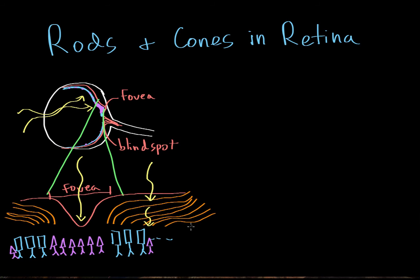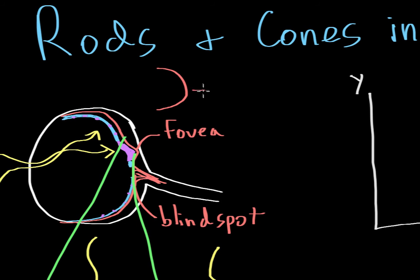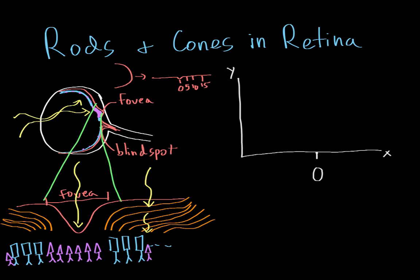Let's look at this same picture graphically. If we draw a graph with the x-axis representing position on the retina and the y-axis representing receptor density, the zero point is where the fovea is. We flatten out the curved retina so that 5, 10, 15 degrees away from the fovea can be marked on both sides.